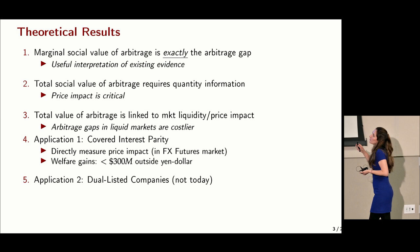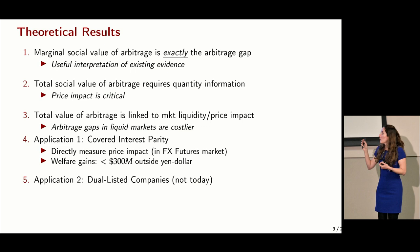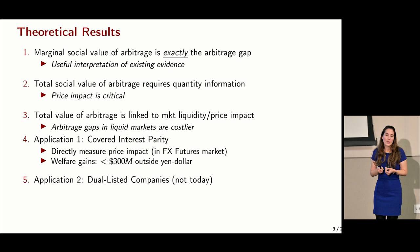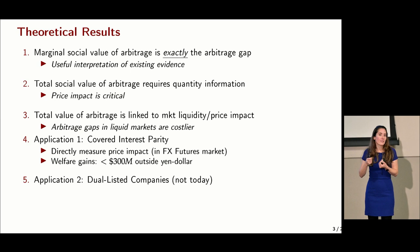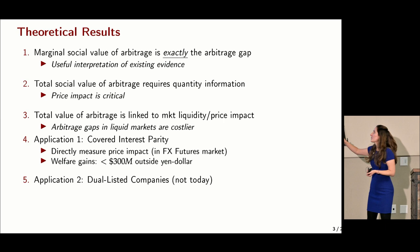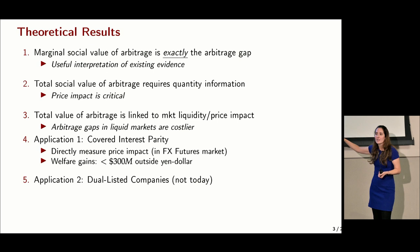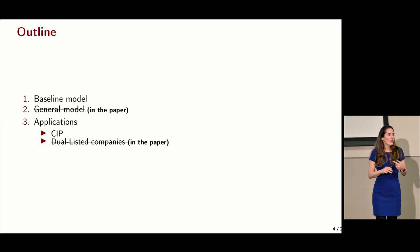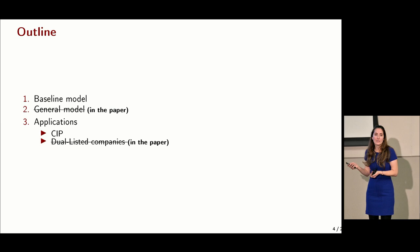We take these results to two applications: the CIP case and dual listed stocks. I'll only cover the CIP case today. For that application, we use CME data, which is very detailed, and measure price impacts in the FX futures market directly. We find that welfare gains do not exceed 300 million outside of the yen-dollar pair, and on average are an order of magnitude smaller. Now let me walk through a simple stylized model of segmented markets where I develop these results.